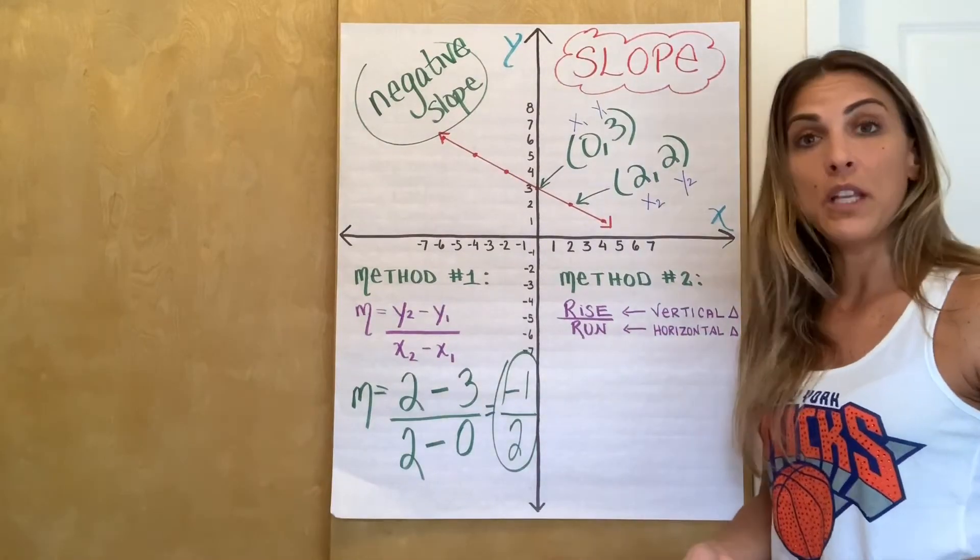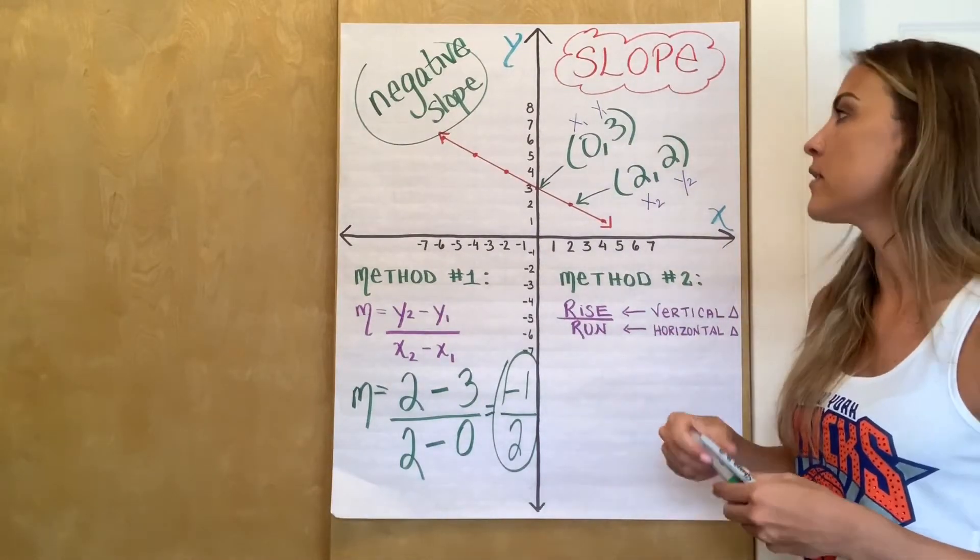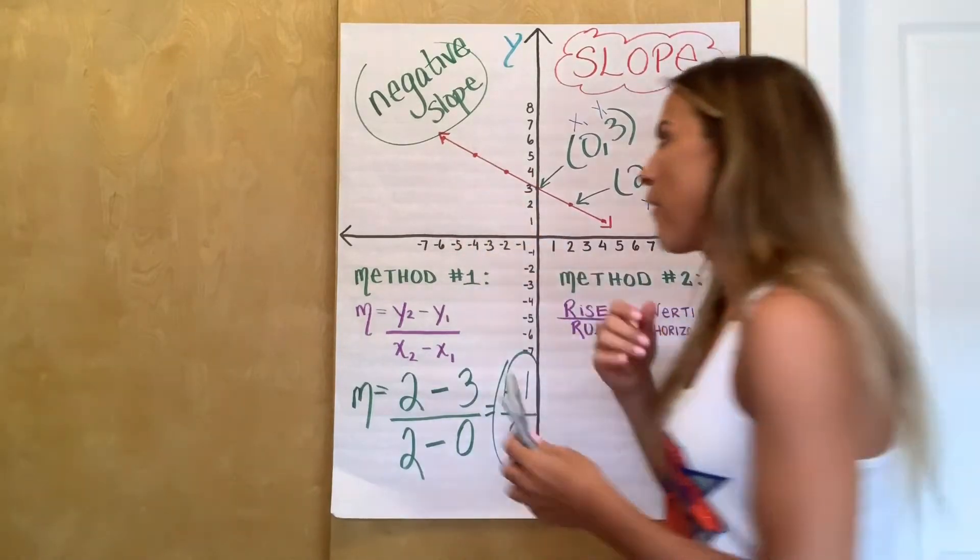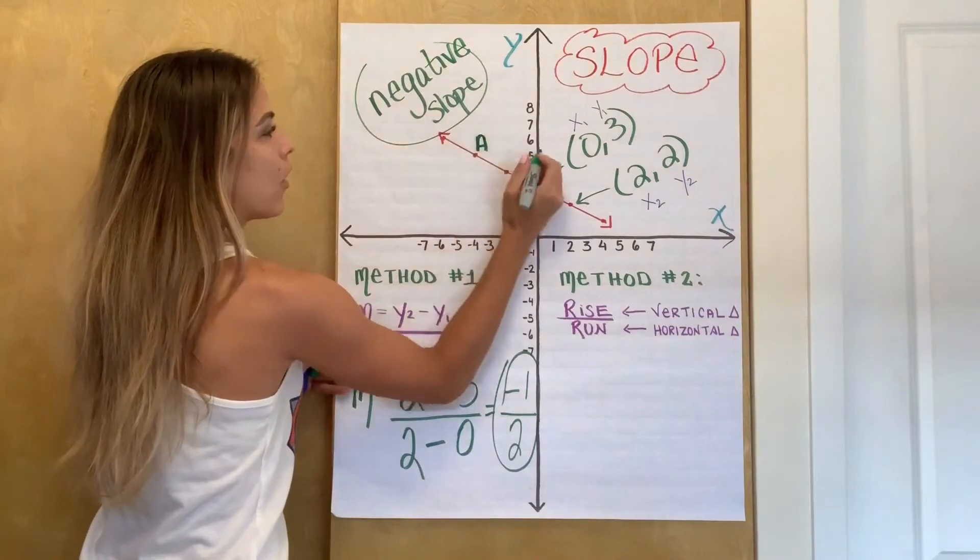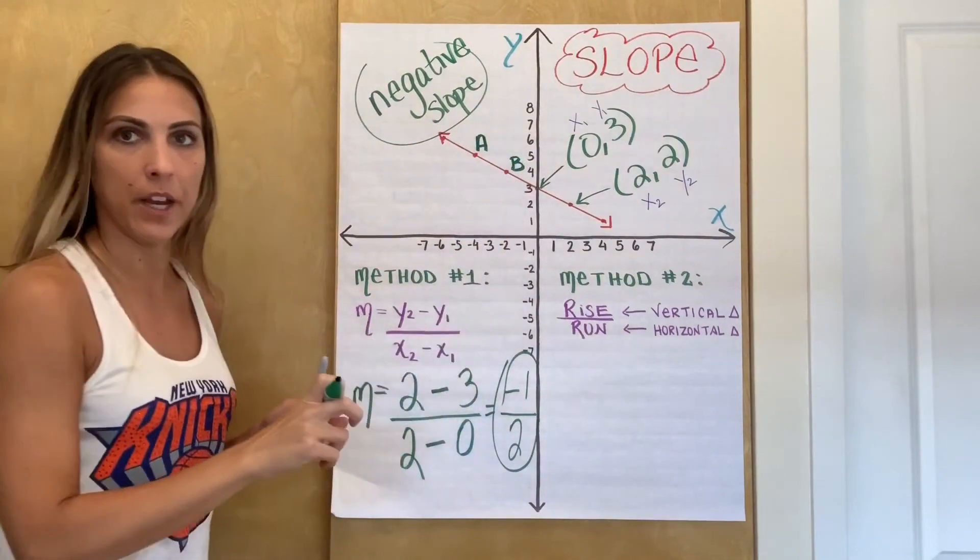So again, you need two points. We're going to pick any two points. So I'm going to take us to this side of the graph now. So if we come over here and let me pick, I'm going to call this point A and call this point B just for some clarity. Okay?